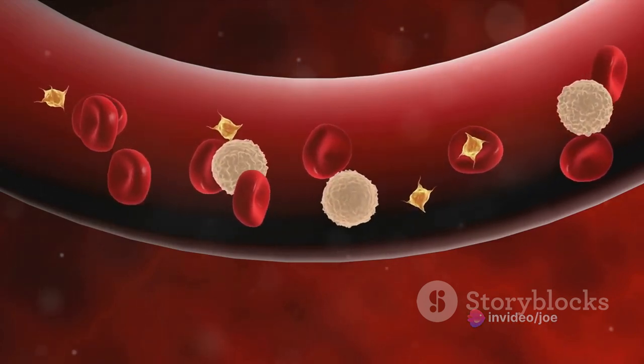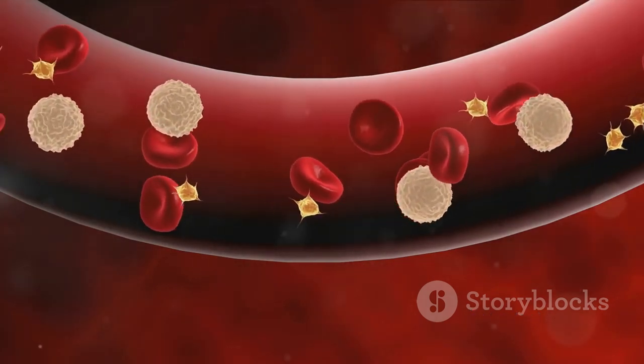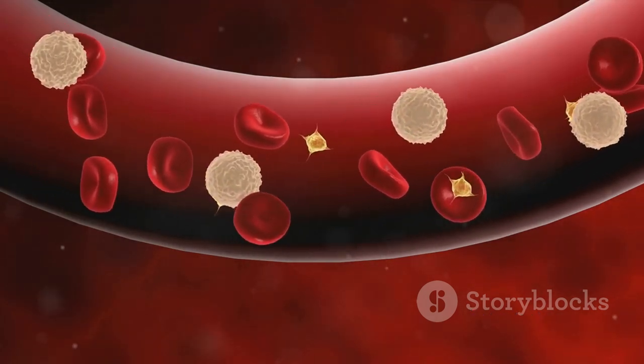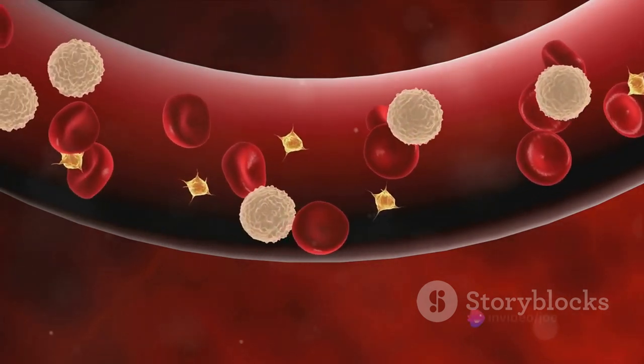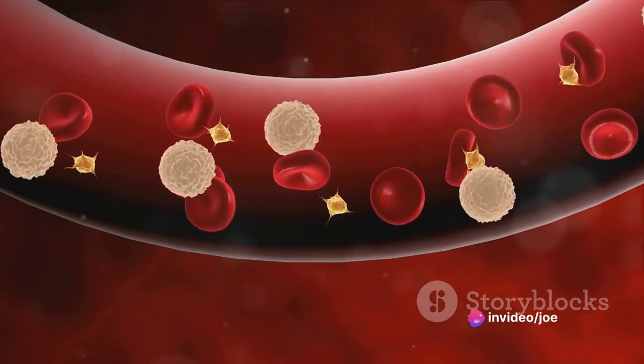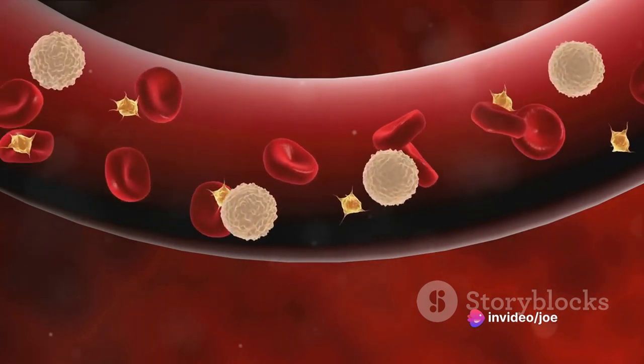Your journey begins in the heart's left chamber, where you're pumped into the body's superhighway, the aorta. From there, you travel through progressively smaller arteries and capillaries, delivering life-sustaining oxygen to every organ and tissue.